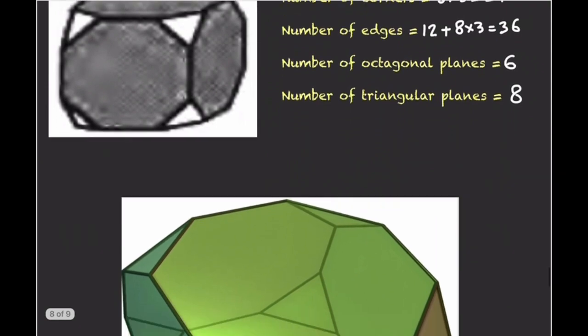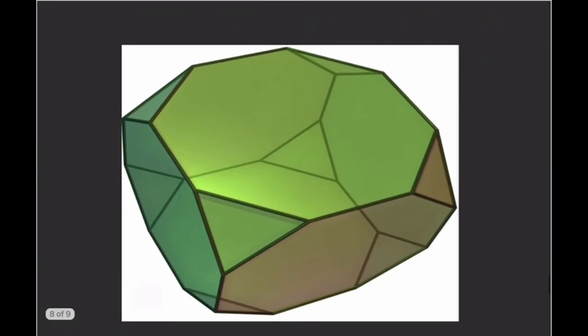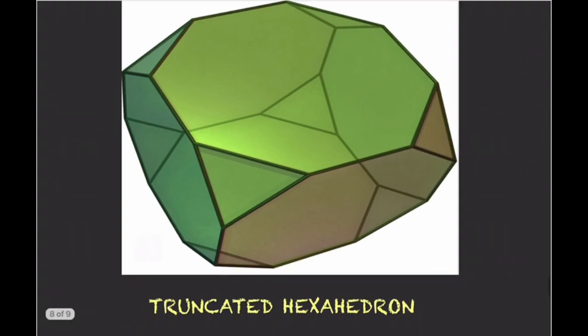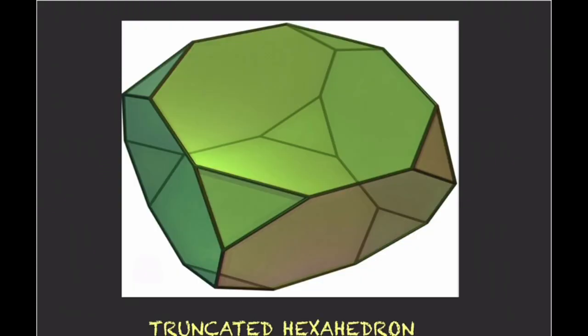This is the actual geometry of a truncated hexahedron (truncated cube). You can count the triangular planes, which equals 8, and the octagonal planes, which equals 6. Friends, if this information is important to you, please like and subscribe to our channel. Thank you.